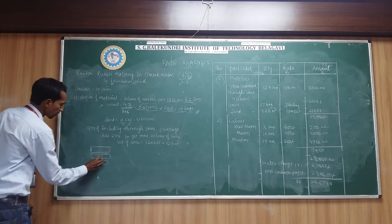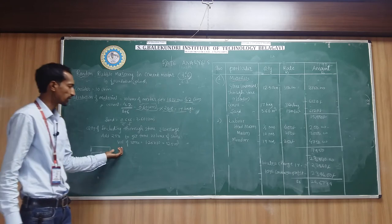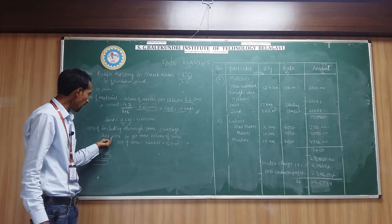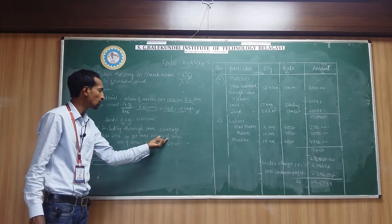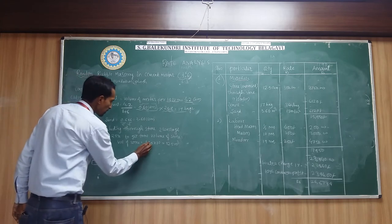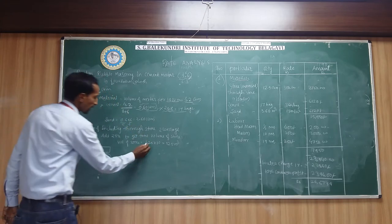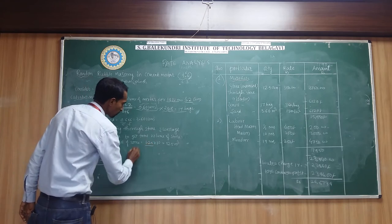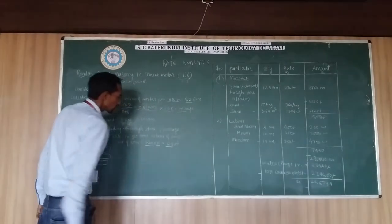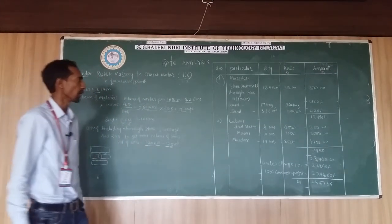In this, mortars are placed. Random rubble masonry and coarse rubble masonry you have studied. These are 20 and 25% to get the total volume of the stones. We are adding 25% in this 10 cubic meter. We are adding 25% means it will be 1.25 into 10. We will get 12.5 meter cube. 12.5 meter cube of stones are required.